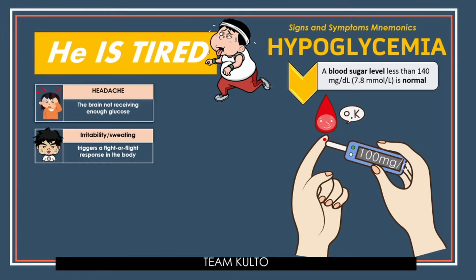E is for Eye — Irritability and Sweating. A low blood glucose level triggers the fight-or-flight response in the body. As a result, the body produces additional norepinephrine and adrenaline, which can lead to heavy sweating, shakiness, and anxiety. Think sympathetic effects: everything goes up except GI and GU. This is the body's compensatory mechanism — hence irritability and sweating.